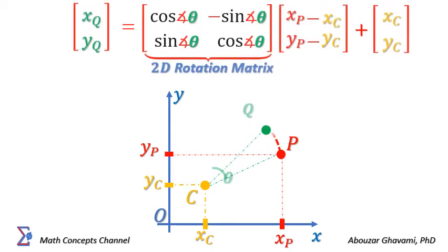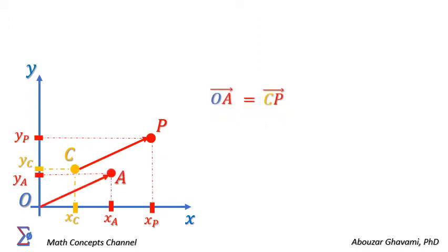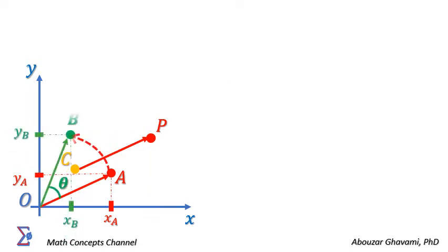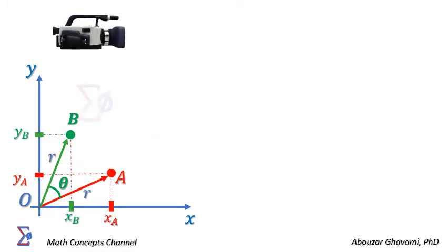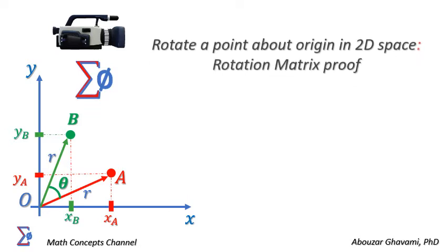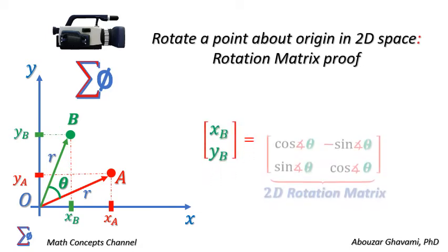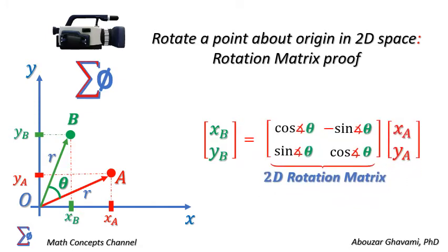Now let us review the detailed proof of the equation for rotating a point around another point in two-dimensional space. From the origin, let us draw vector OA equal to vector CP. Point B is the rotation of point A counterclockwise with angle theta around the origin. In a video published on this channel titled 'Rotate a point about origin in two-dimensional space,' we showed that the coordinates of point B are derived as the 2D rotation matrix with angle theta times the coordinates of point A.